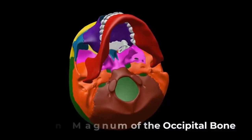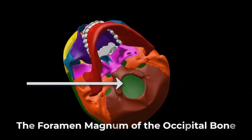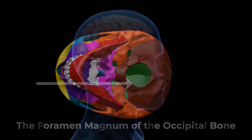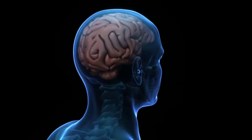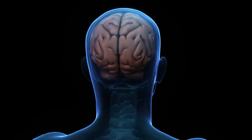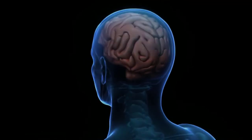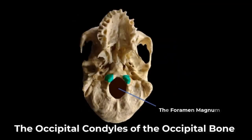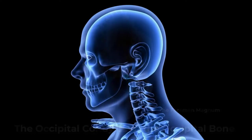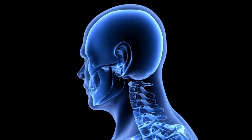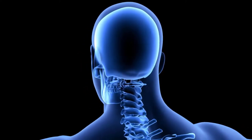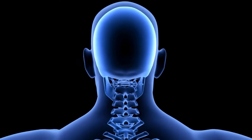On the base of the skull, the occipital bone contains a large opening called the foramen magnum. The foramen magnum allows for passage of the spinal cord as it exits the skull. On either side of the foramen magnum is an oval-shaped occipital condyle. These condyles form joints with the first cervical vertebrae and thus support the skull on top of the vertebral column.